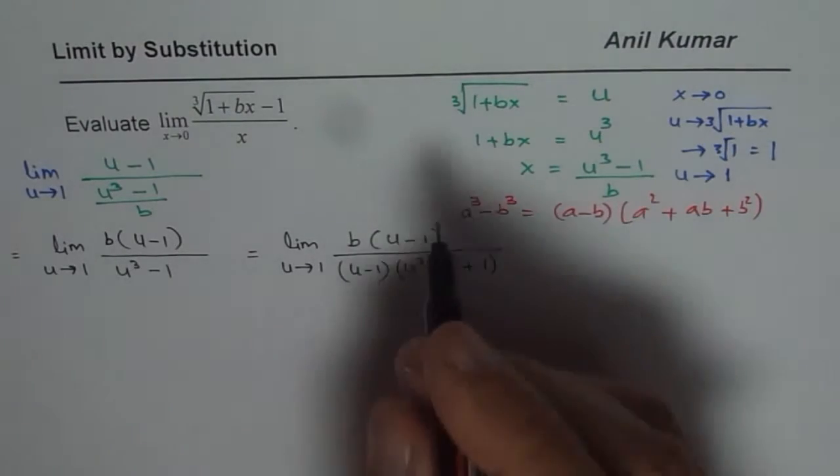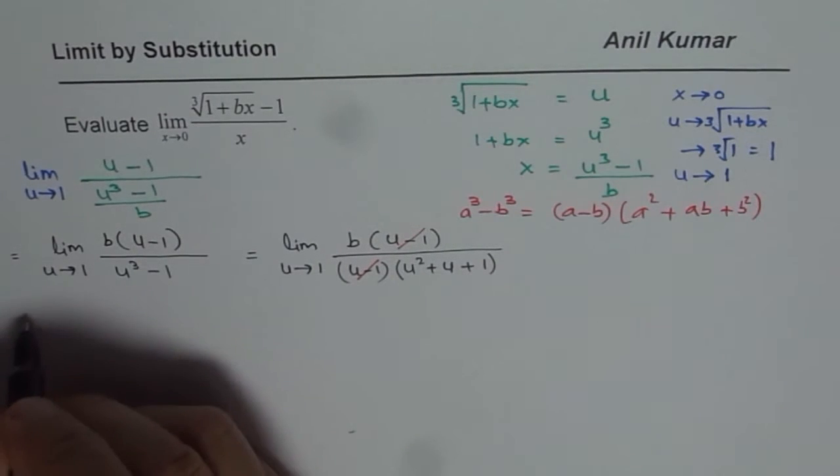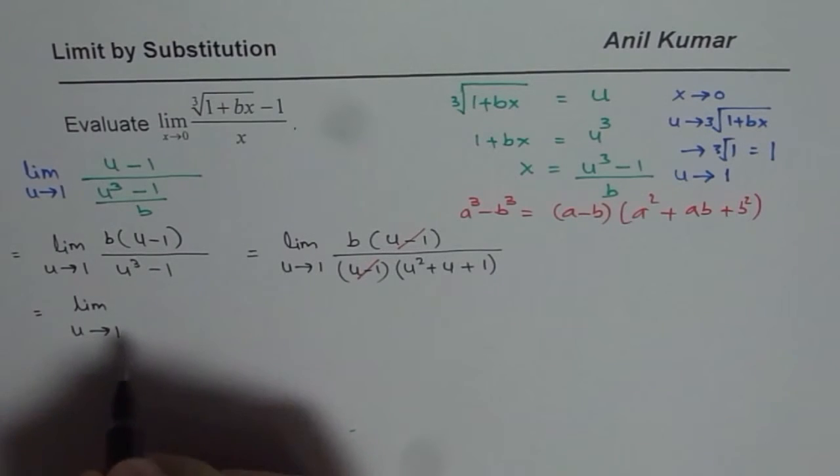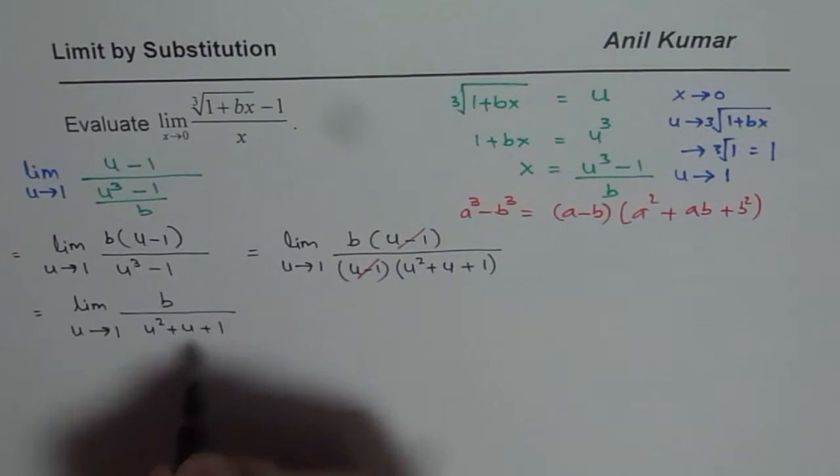Now as you can see, u minus 1, u minus 1 cancel out. So we can rewrite this limit as limit u approaches 1, b over all this which is u squared plus u plus 1.